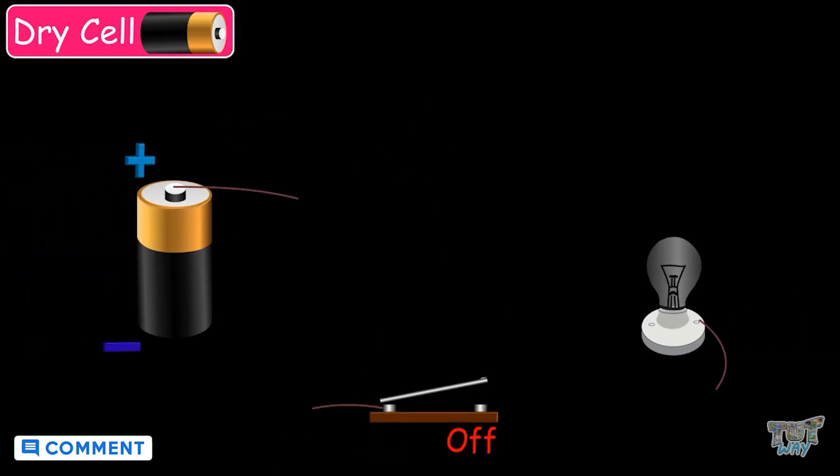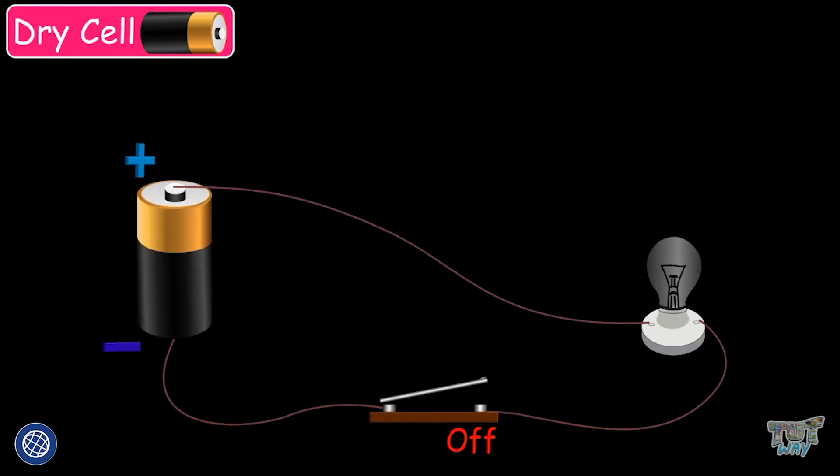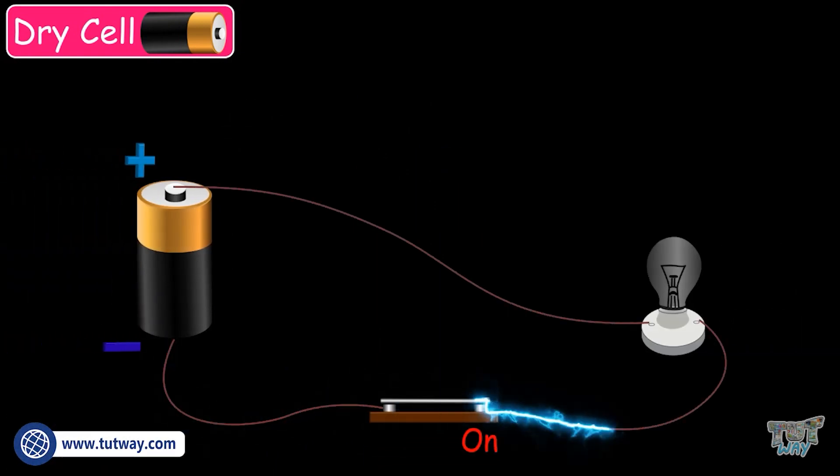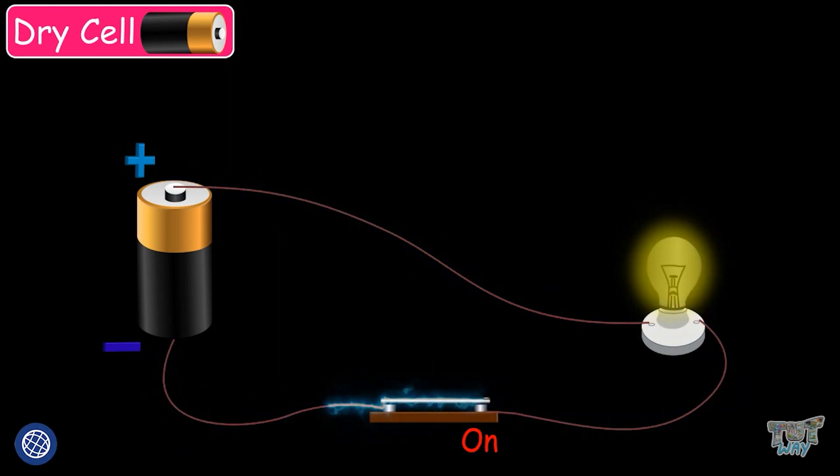We have also learned about open and closed circuits. The current only flows when the circuit is closed, and the current does not flow in an open circuit.